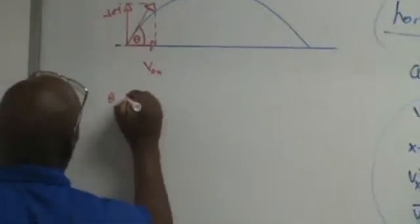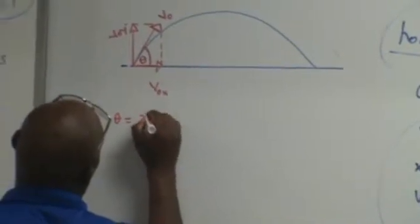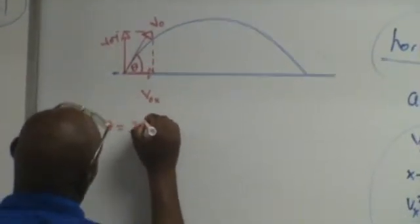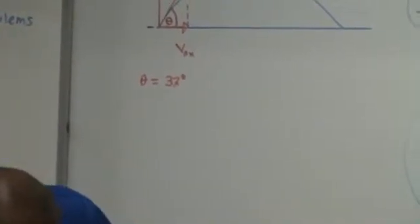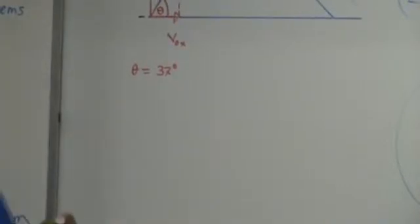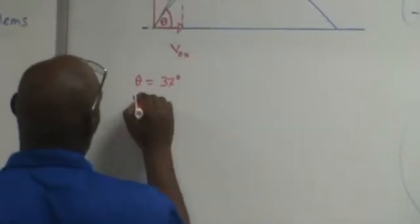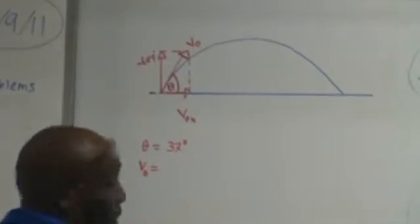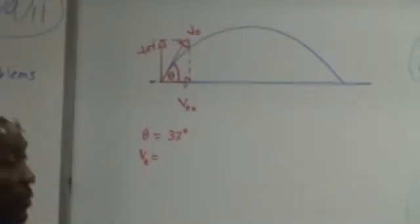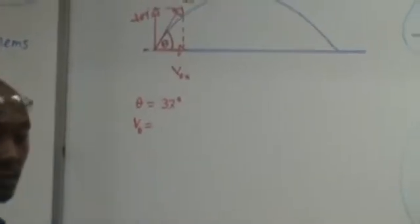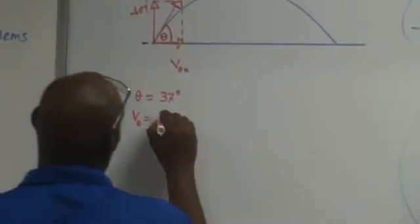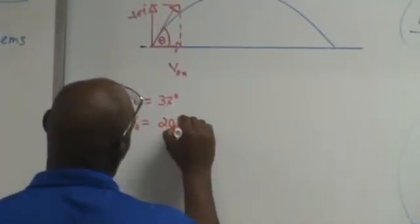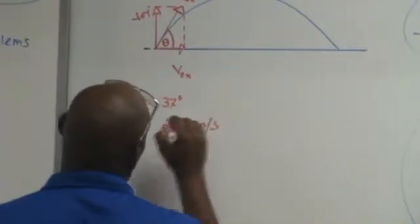So theta is 37 degrees. And we know V0, you actually know that all the time, is what is it, 22 meters per second? Wait a minute, what's V0? 20 meters per second.